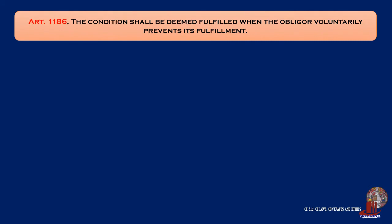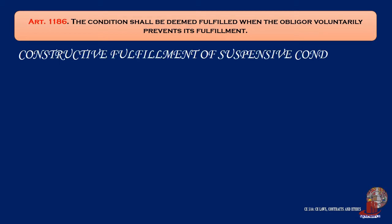Article 1186: The condition shall be deemed fulfilled when the obligor voluntarily prevents its fulfillment. This article discusses constructive fulfillment of suspensive condition. The law does not require that the obligor acts with malice or fraud, as long as his purpose is to prevent the fulfillment of the condition.